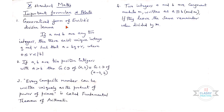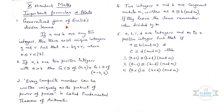Two integers a and b are congruent modulo m, written as a ≡ b (mod m), if they leave the same remainder when divided by m. This is the fifth point.